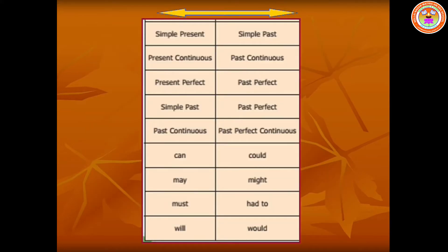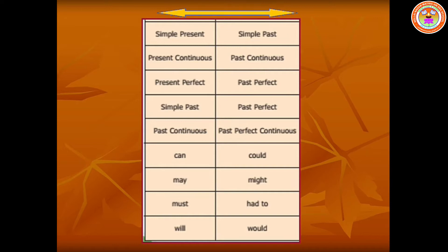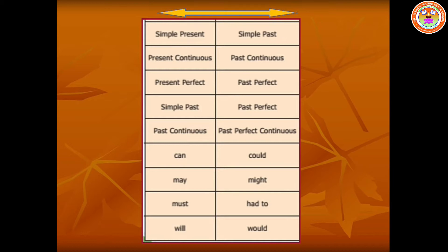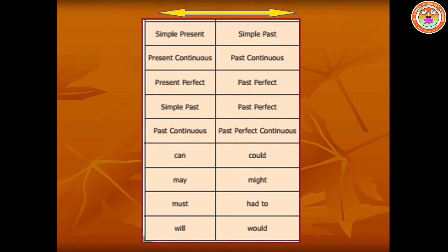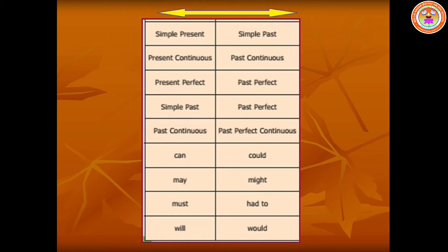Tense changes: simple past should be changed into simple present, past continuous into present continuous, past perfect into present perfect, past perfect into simple past. Would should be changed as can, might into may, had to into must, and would into will.